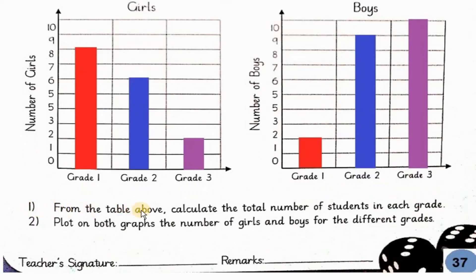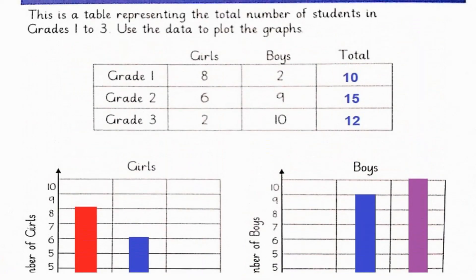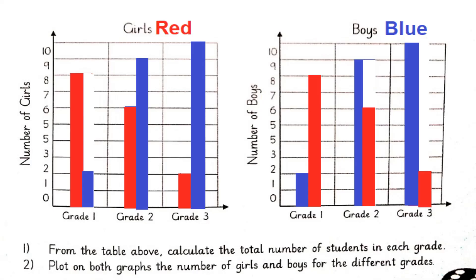Number one: From the table above, calculate the total number of students in each grade. Total number of students in each grade यहां هم نے calculate किया ہے. Number two: Plot on both graphs the number of girls and boys for the different grades. آپ نے دونوں graphs پر number of girls اور boys plot کرنے ہیں — graph one میں boys کے تین bar اور graph two میں girls کے تین bar.